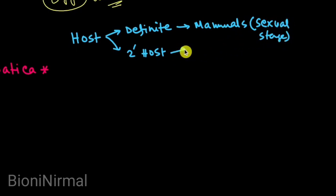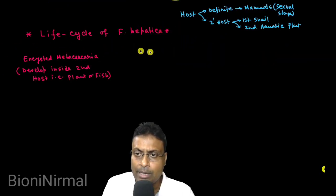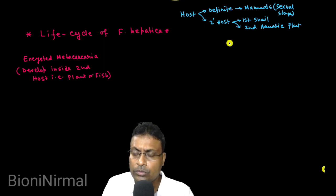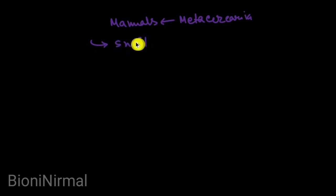The second host is the intermediate host. The first intermediate host is the snail. The snail harbors larval life cycle stages. The second intermediate host is the aquatic plant.